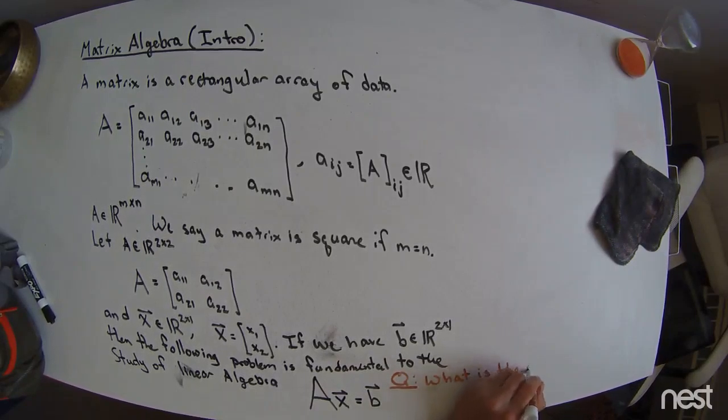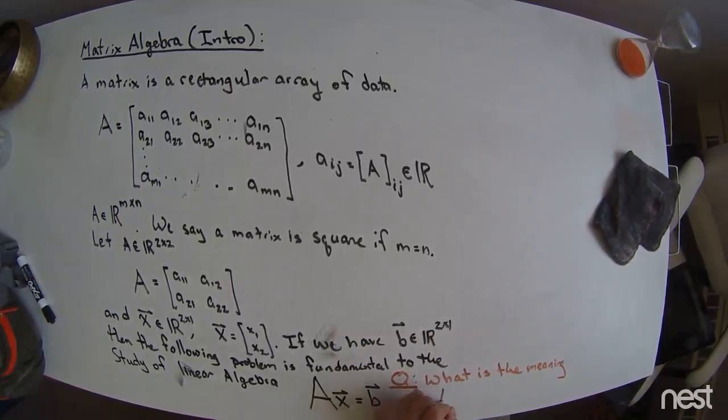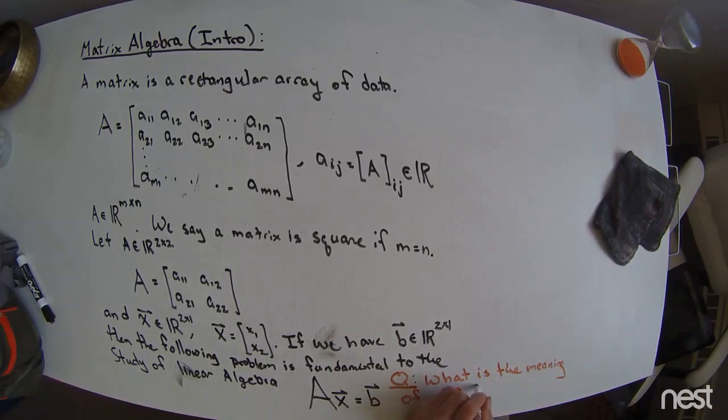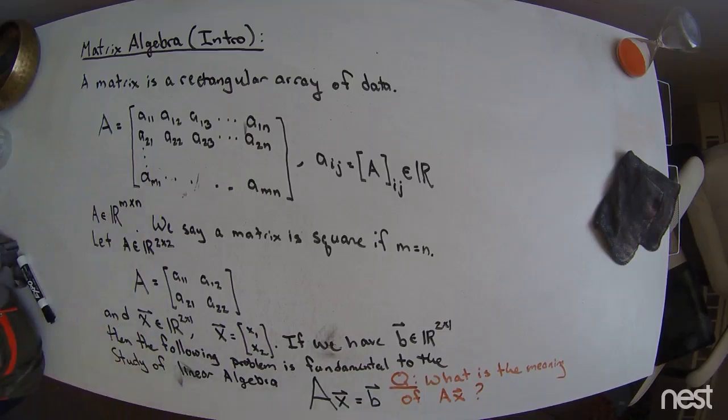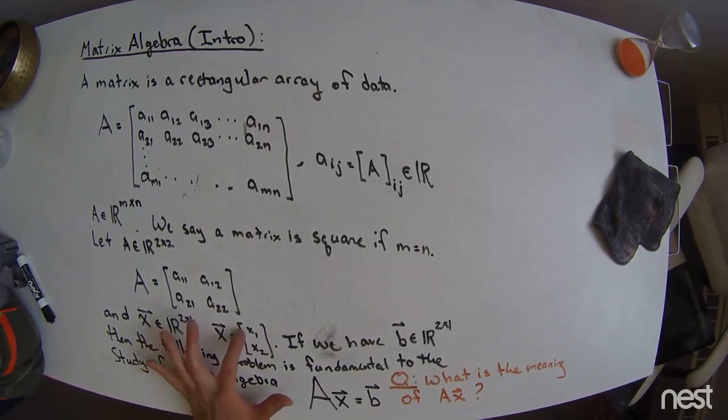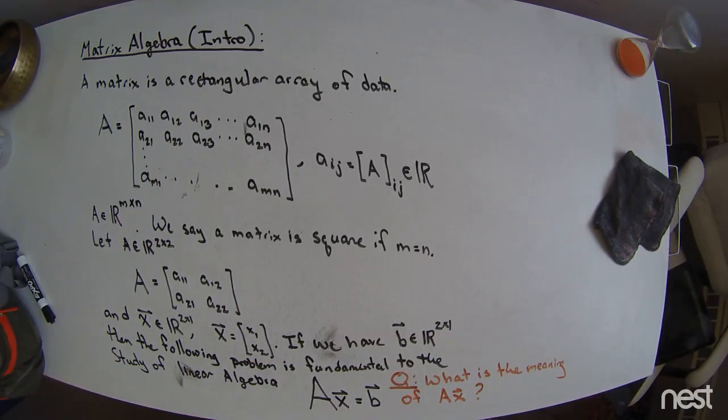But this problem right here raises a very natural question, and that natural question is what is the meaning of A times X? We have a new mathematical object that is the A matrix. We're going to stick to this 2 by 2 matrix right here for our purposes. And now I have this vector right here, and that is a vector of two elements.